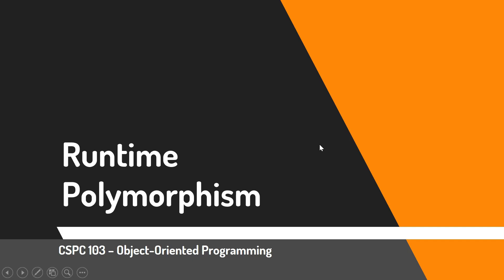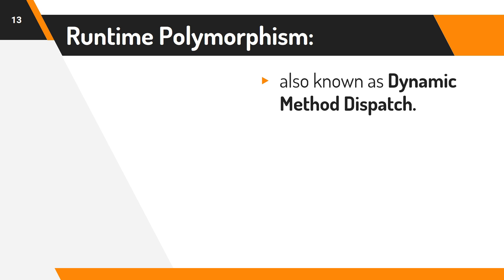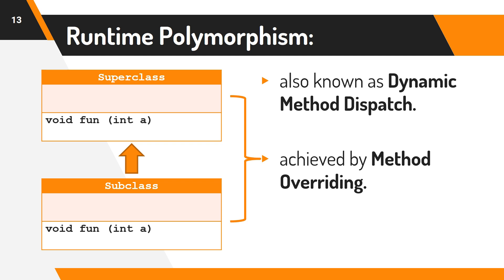Next, we have runtime polymorphism. Runtime polymorphism is also known as dynamic method dispatch. This type of polymorphism is achieved by method overriding. If you will notice in the diagram, there is the presence of inheritance — meaning we have the superclass and the subclass. In this example, it has the same method name and same parameter.